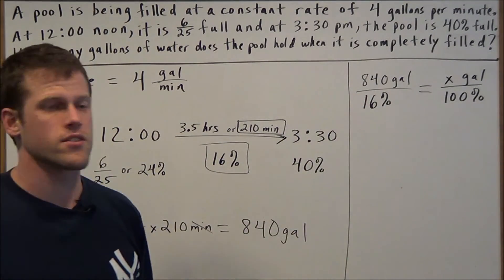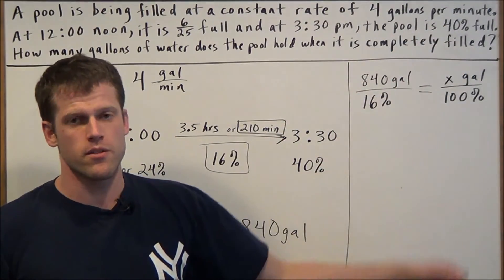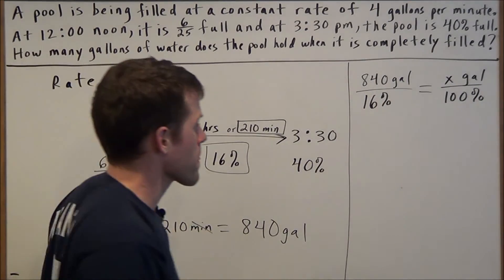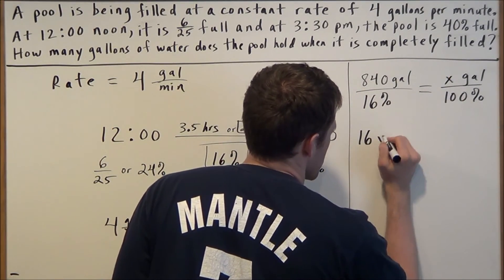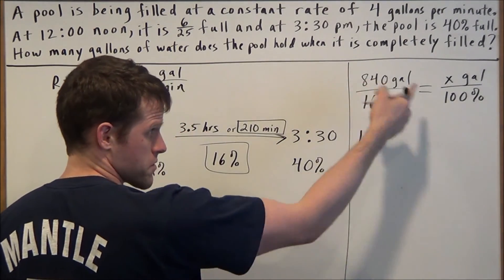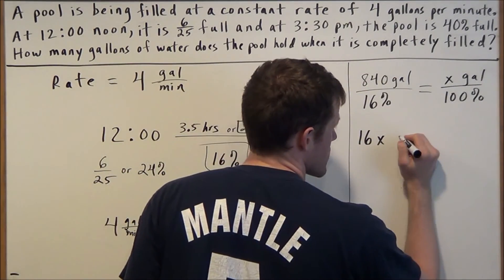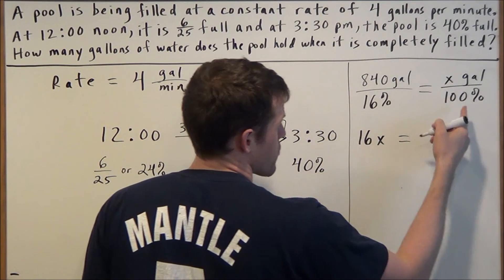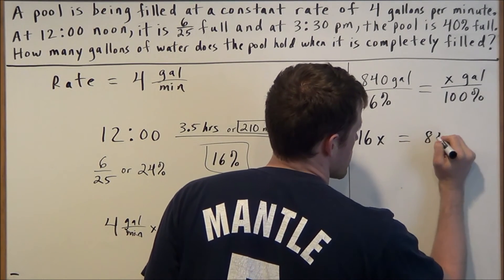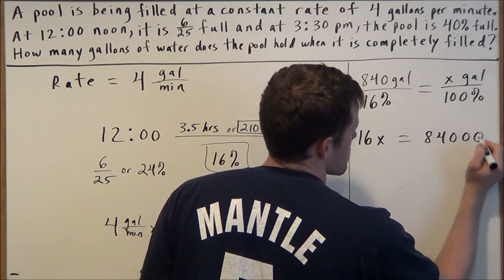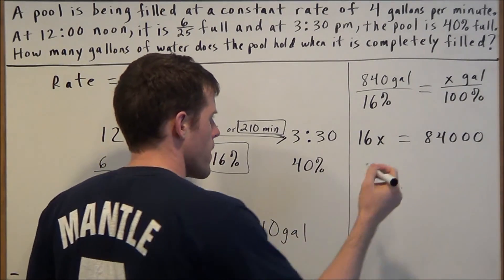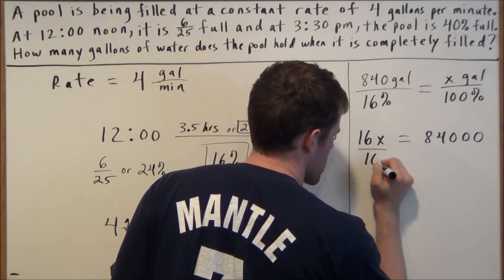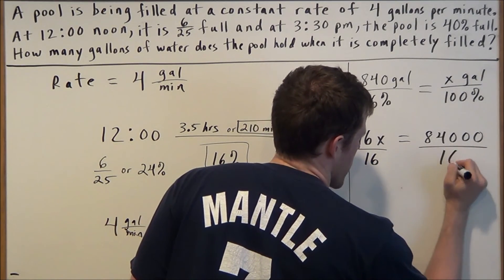To solve for x, we're just solving a basic proportion here. We're going to cross multiply, and we're going to have 16 times x. We could ignore the percents and the units for this part. 16x equals 840 times 100, which is 84,000. We're just going to add two zeros. And for a question like this, you would most likely be allowed to use a calculator.